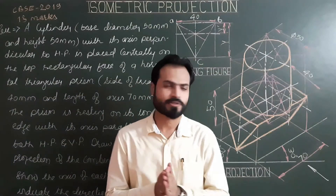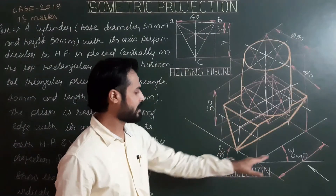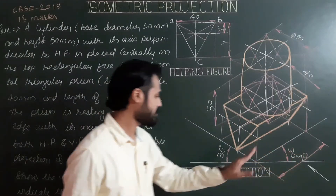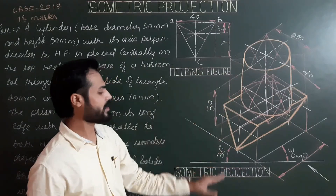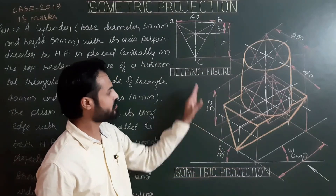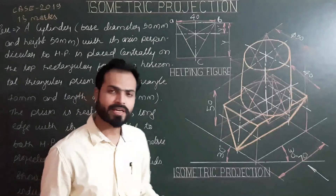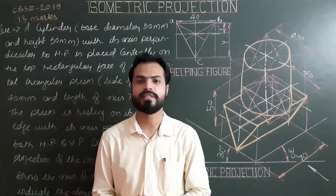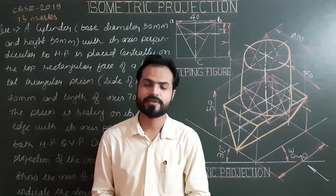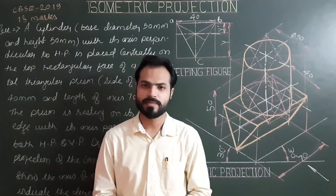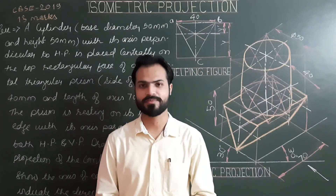This is all from my side. Please draw this problem in your sheet, indicate the direction of observation, add dual dimensioning, and write the names or headings of the two figures. If you have any doubt in this problem or in any topic of engineering graphics, please write your comments in the comment section. Thank you.